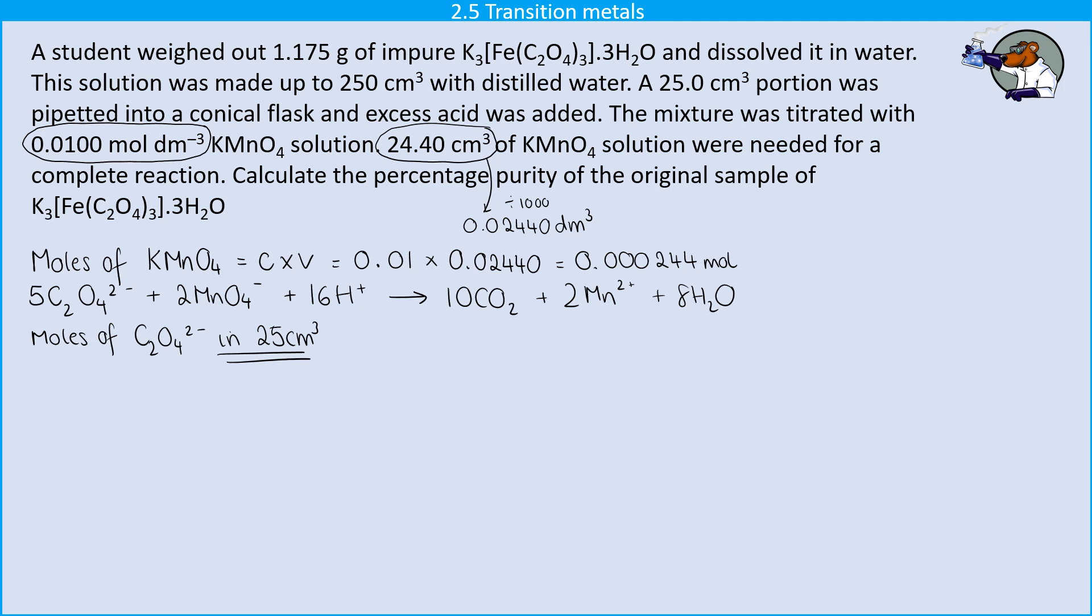So I'm going to look at my coefficients. Remember, I've already worked out the potassium permanganate. So I'm going to take that coefficient firstly, and then take the coefficient in front of the ethane dioate ions. So I'm going to take my moles of manganate and divide by the coefficient in front of manganate. So I'm dividing by the thing that I already know the moles of, and then multiply it by the other coefficient. And that's going to give me moles of 0.00061.